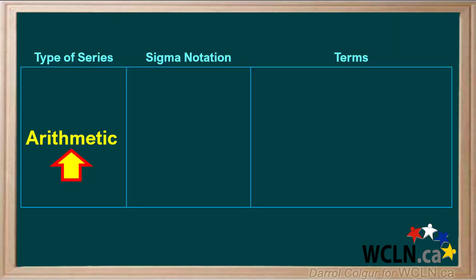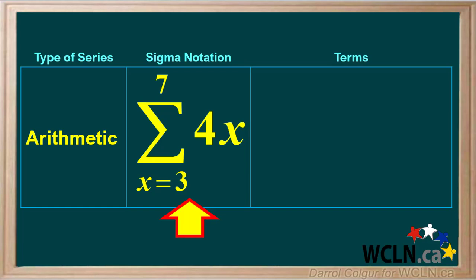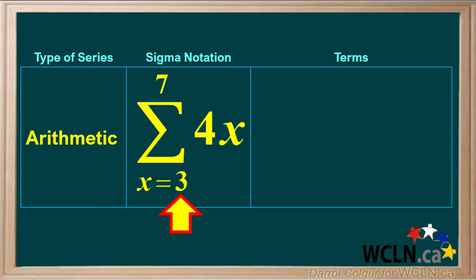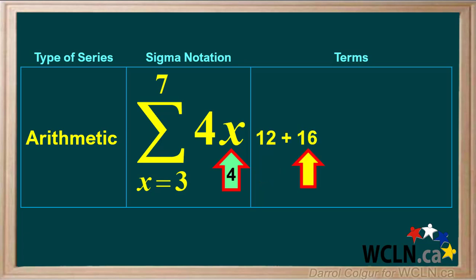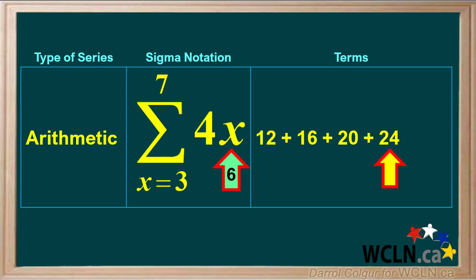We'll start with an example of a finite arithmetic series. The function is 4x, with x equals 3 for the first term and x equals 7 for the last term. Substituting 3 for x gives a first term of 12. For the second term, x equals 4, so the second term is 16. For the third term, x equals 5, so the third term is 4 times 5, or 20. x equals 6 for the fourth term, giving 24. And x equals 7 for the last term, giving 4 times 7, or 28.